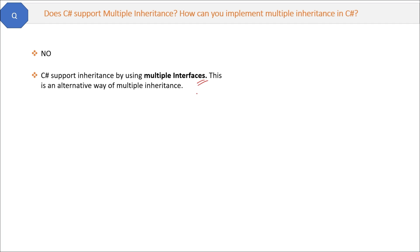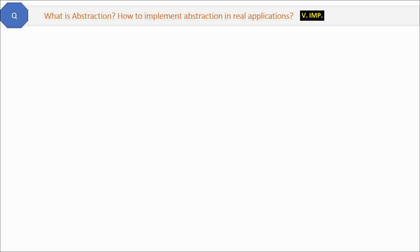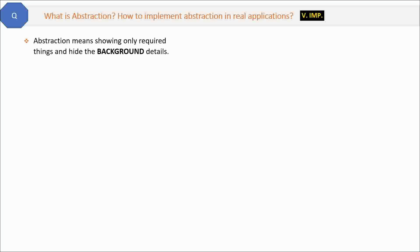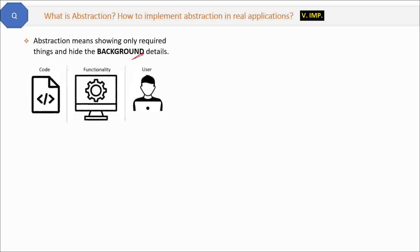Question two: What is abstraction? How do you implement abstraction in real applications? Abstraction means showing only required things and hiding the background details. For example, an end user can use a web application without knowing how the application code is working internally — that is abstraction.